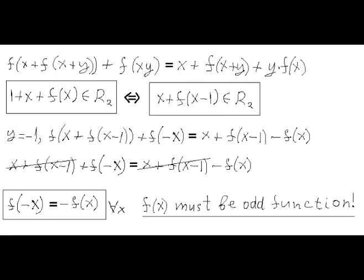Now, if we substitute minus 1 for y, we can transform this functional equation to the equality f of minus x equals minus f of x for all real x. This is because the expression x plus f of x minus 1 is this third type of a fixed point, so that f of x plus f of x minus 1 can be replaced with x plus f of x minus 1.